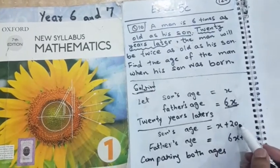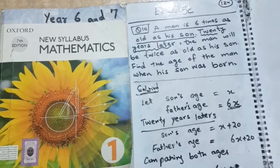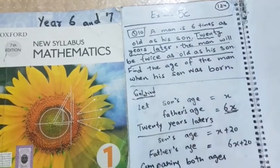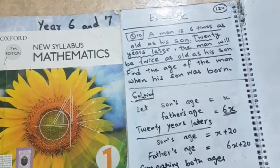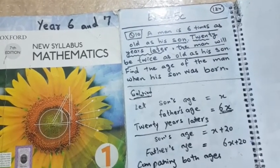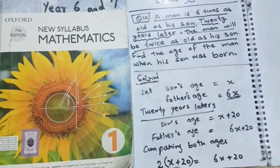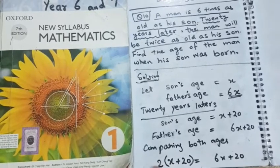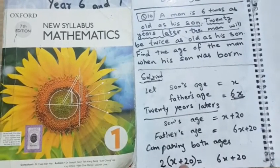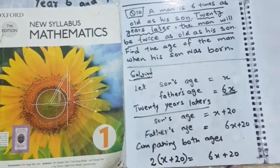After 20 years, son's age is x plus 20. And father's age is 6x plus 20. But what have they said? The man will be twice as old as his son. Means you will take the twice of the son's age to make the father's age. You will make twice of the son's age to make the father's age. Baitے کی جو 20 سال کے بعد جو عمر ہے اس کا ٹو ٹائمز لیں گے تو یہ father کی تب بنے گی.